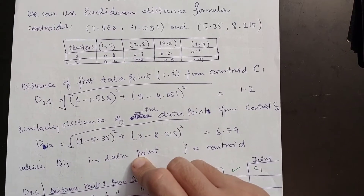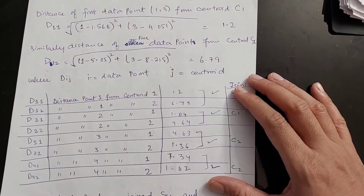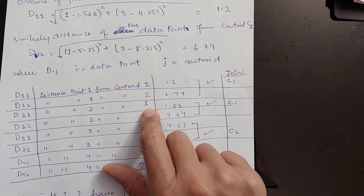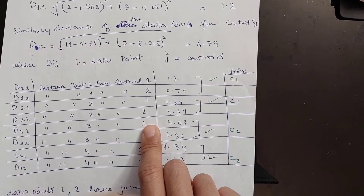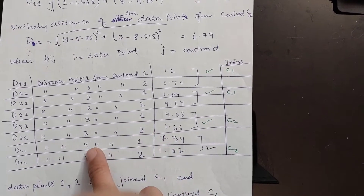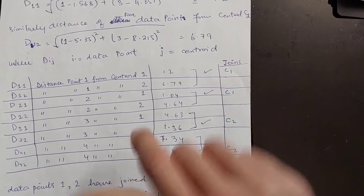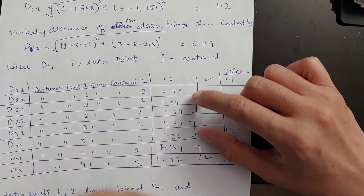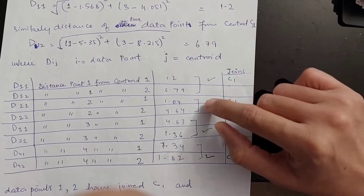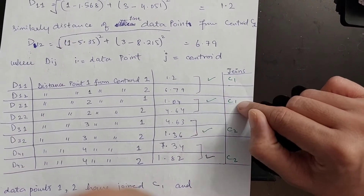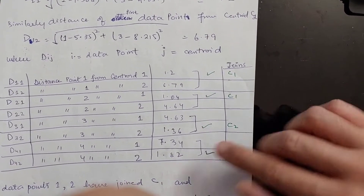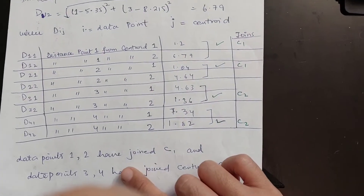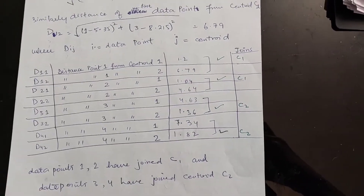We calculate the distances of all data points from both centroids: the second, third, and fourth data points from centroid 1, and all data points from centroid 2. Based on these distances, whichever distance is smaller, we allocate that cluster to the data point. From the results, C1 is assigned to data points one and two, and C2 is assigned to data points three and four.